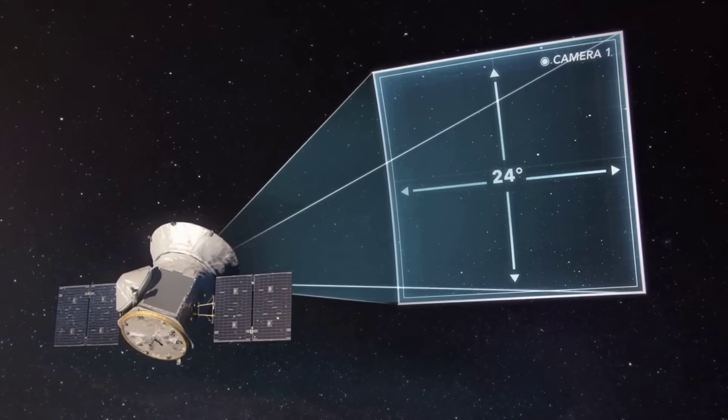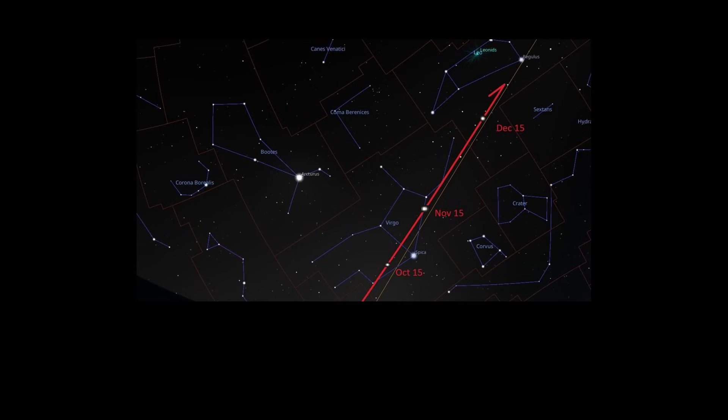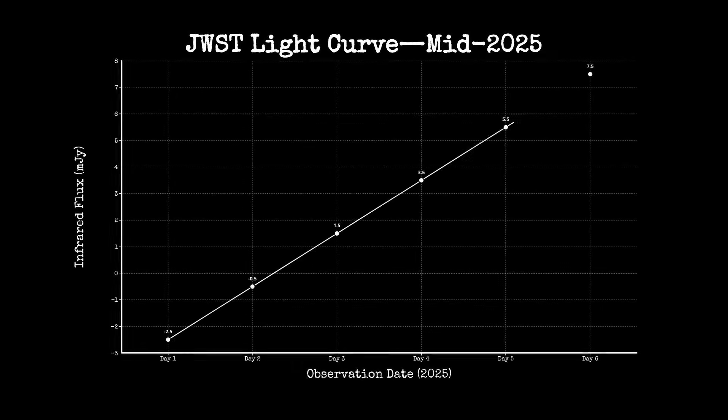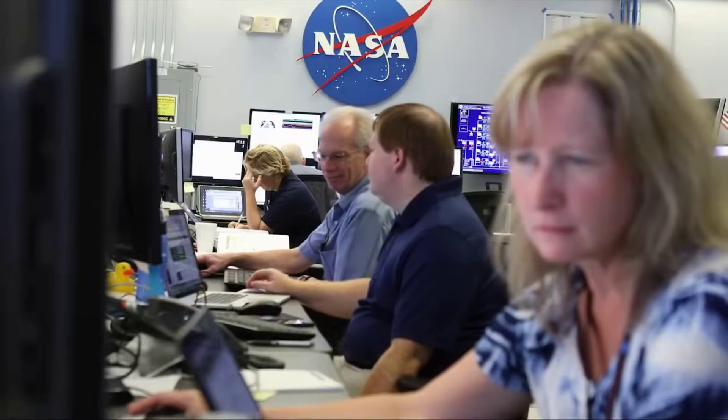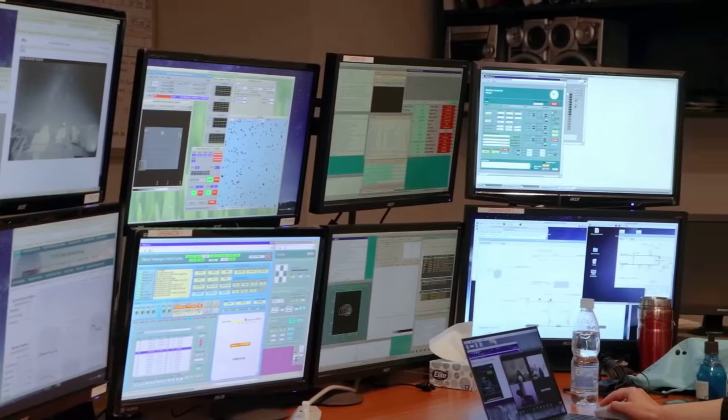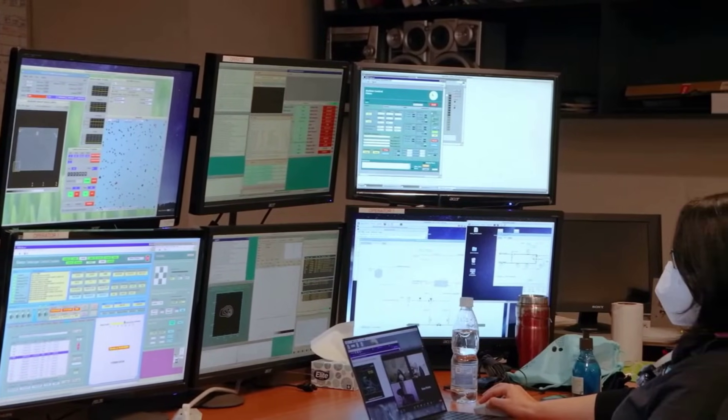May 7th, 2025. TESS, the exoplanet hunting satellite, logs a faint but persistent brightening in a region of the sky now known to host 3I-Atlas. The light curve rises with mechanical steadiness. No spikes, no sudden drops, just a slow, unwavering climb. Days pass, then weeks. The pattern holds. By the time ground-based teams catch up in July, the trend is unmistakable. This object has been active far longer than first assumed.